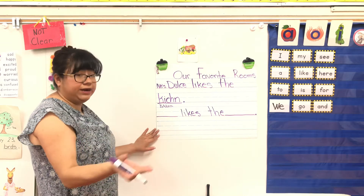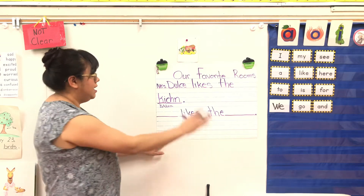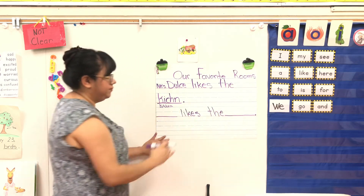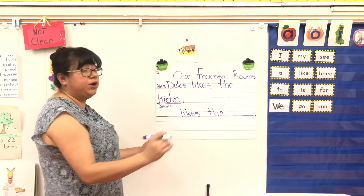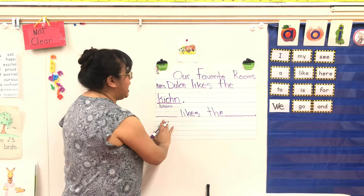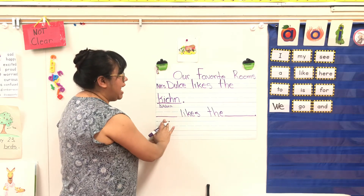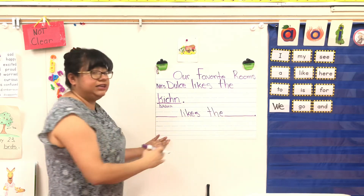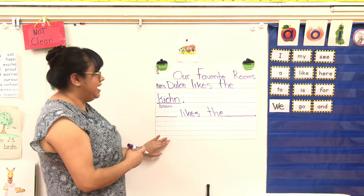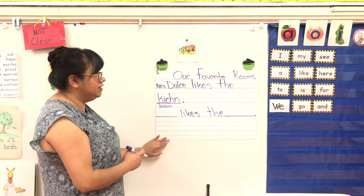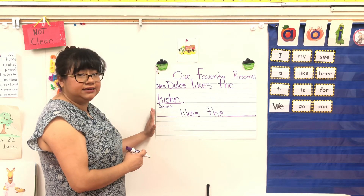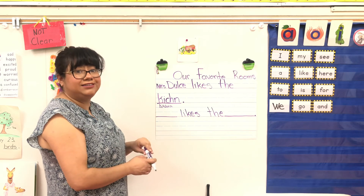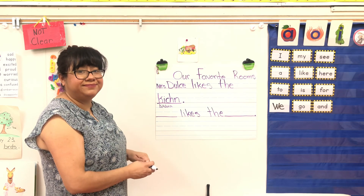So we can, for example, say, 'Nan likes the living room.' Or you can say, 'Pat likes the bedroom because she can sleep there.' Okay, so go ahead and write your telling sentence about your favorite room in your journal. Can't wait to read them!